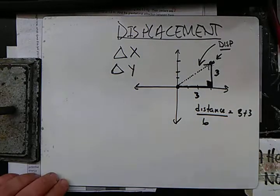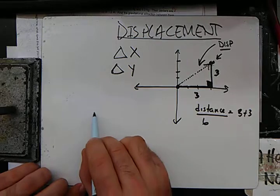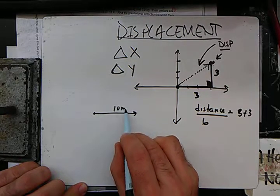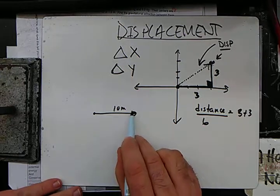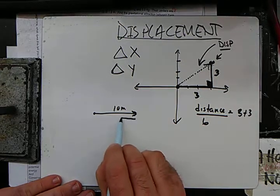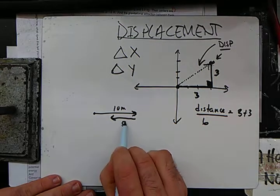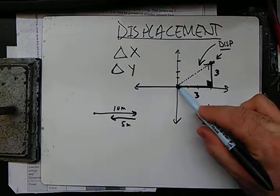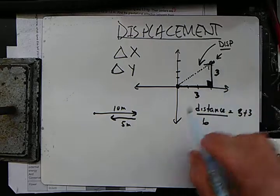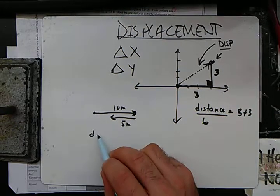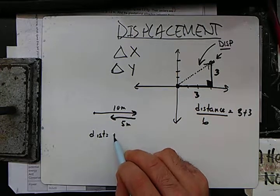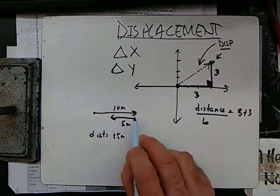One more example, if a bird flies 10 meters this way, and then turns around and flies 5 meters this way, remember the displacement is from the beginning to the end, distance is the 10 plus the 5, displacement...